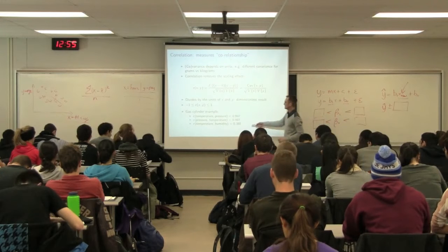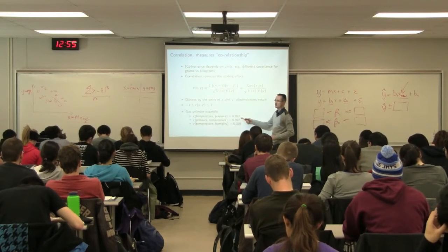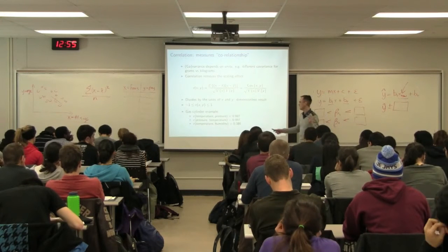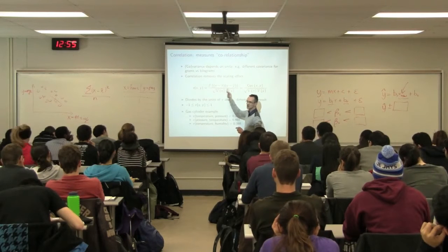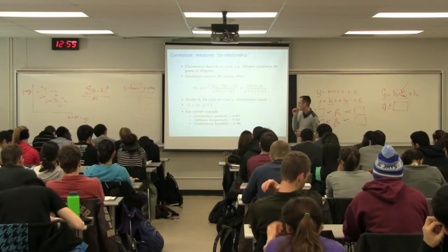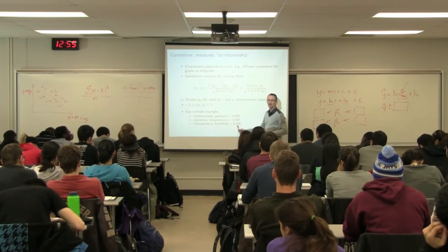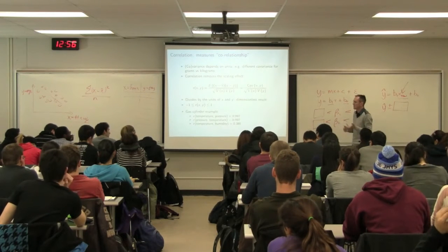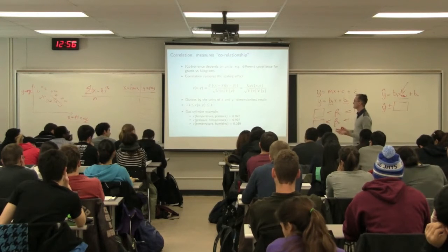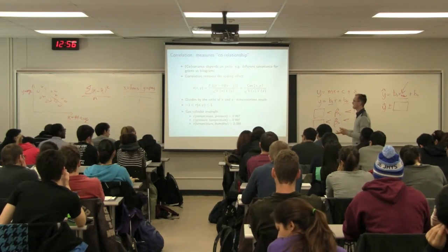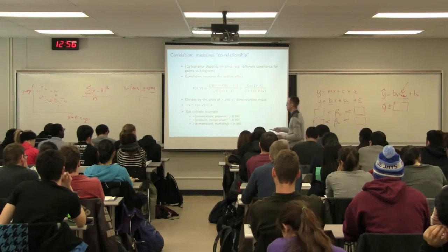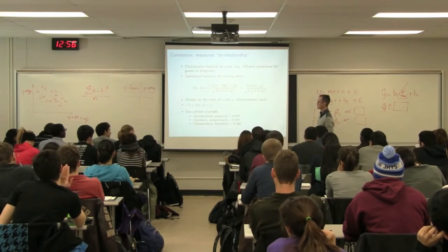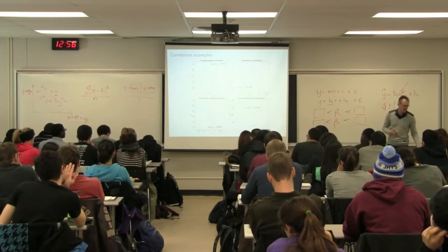In the gas cylinder examples: correlation between temperature and pressure is 0.997 — and notice it's symmetric, so pressure versus temperature gives the same value. Correlation between temperature and humidity is 0.38. We expect no relationship there, so is 0.38 big or small? Is there maybe an outlier causing that? Let's look at visual measures of correlation.